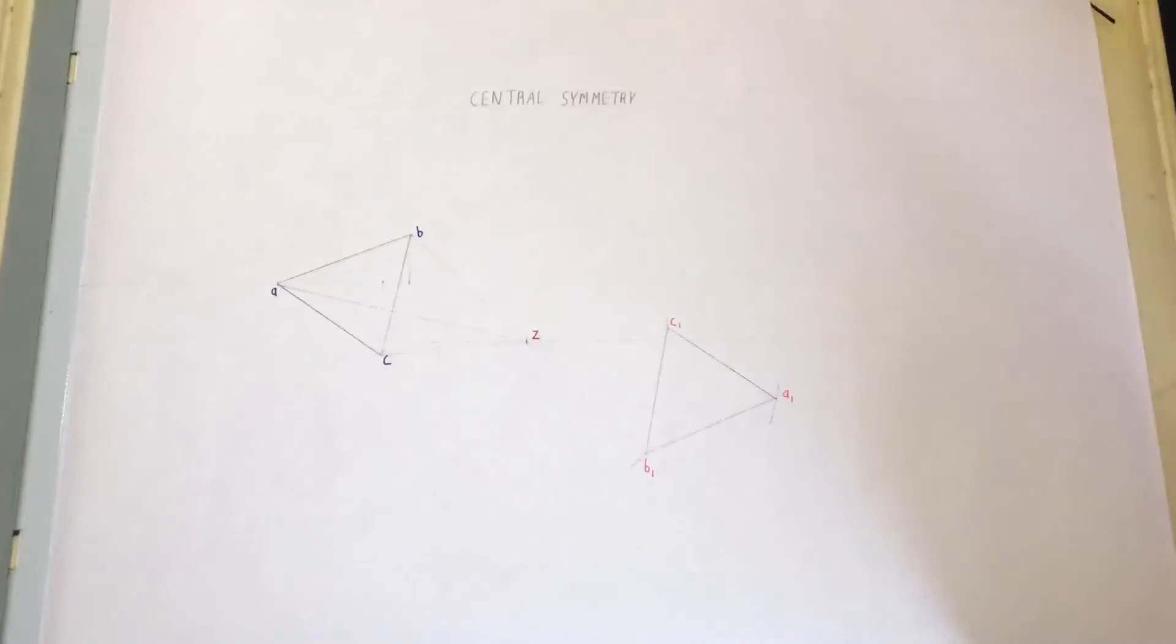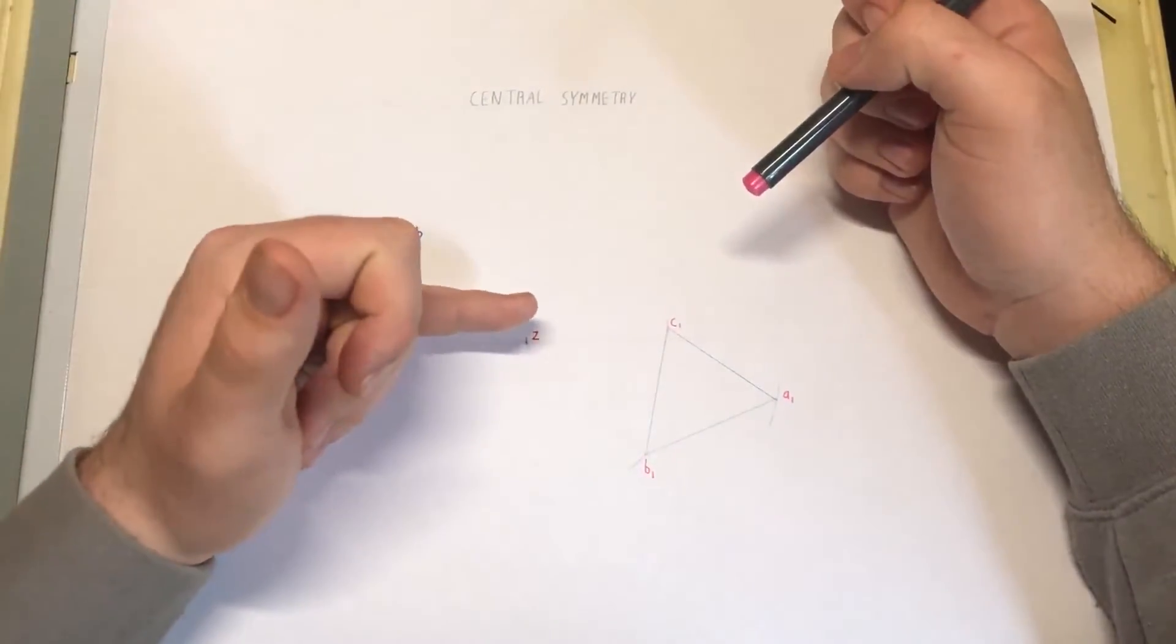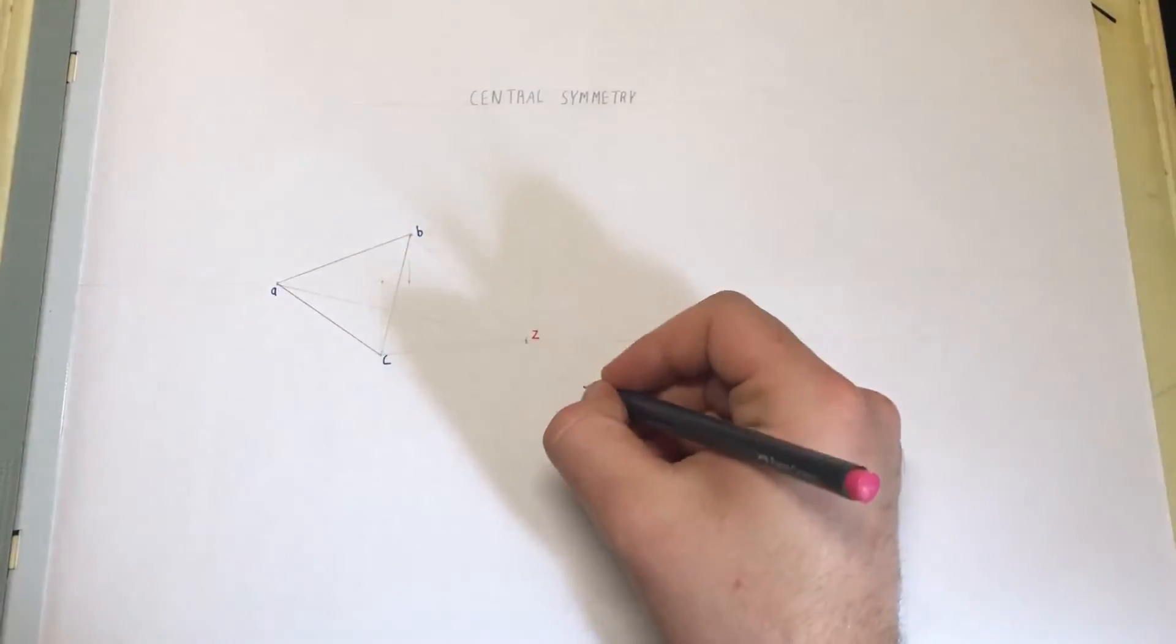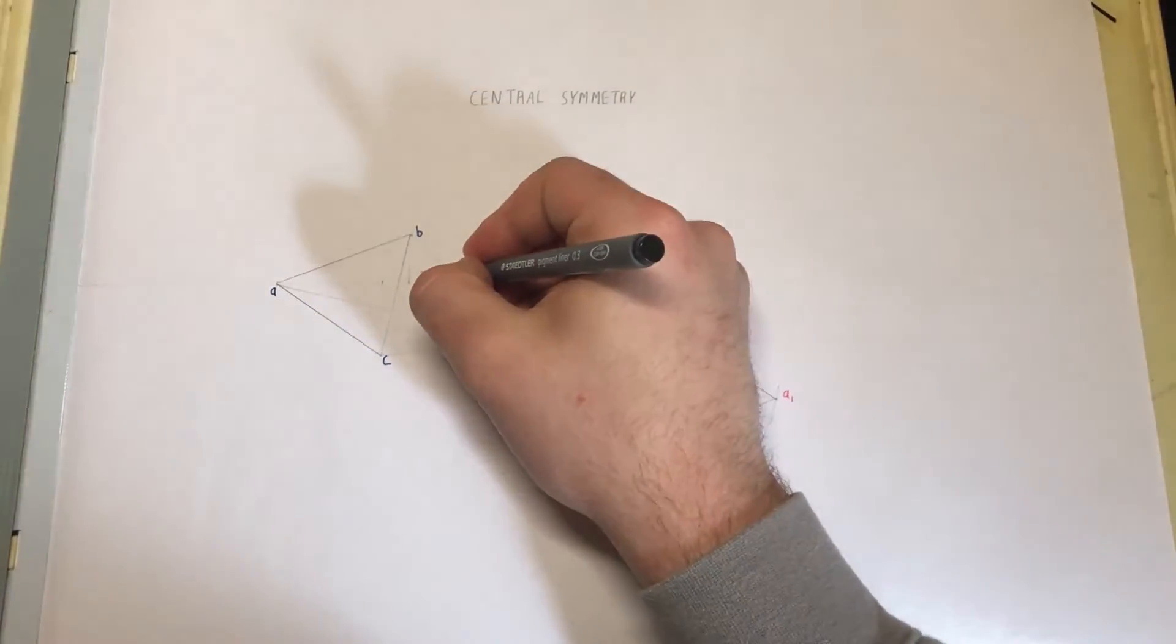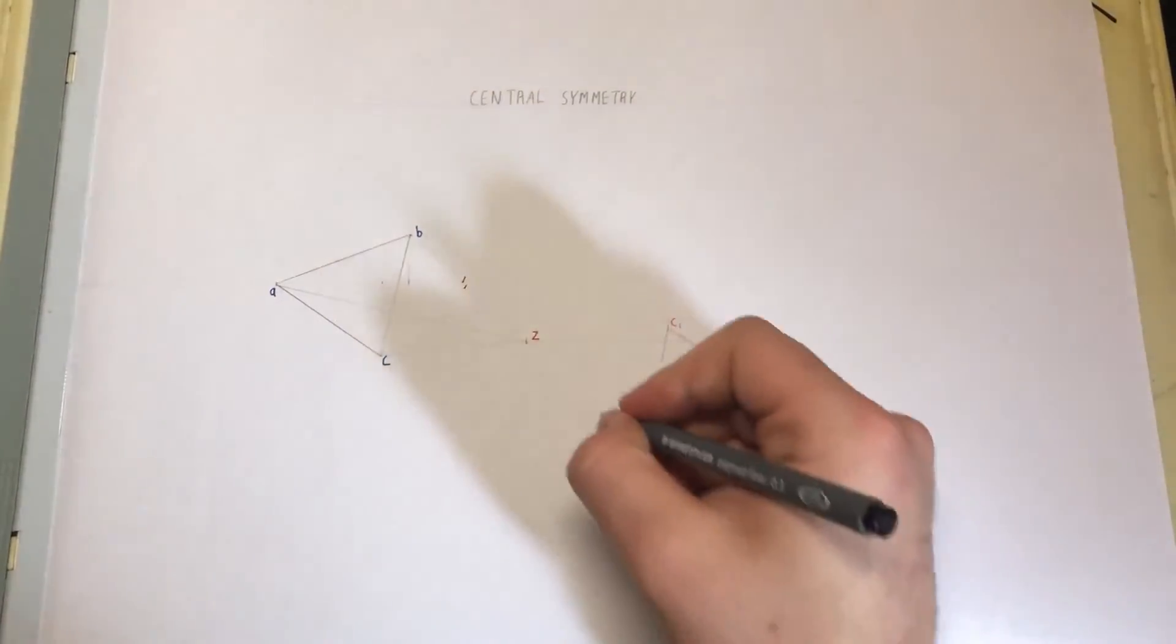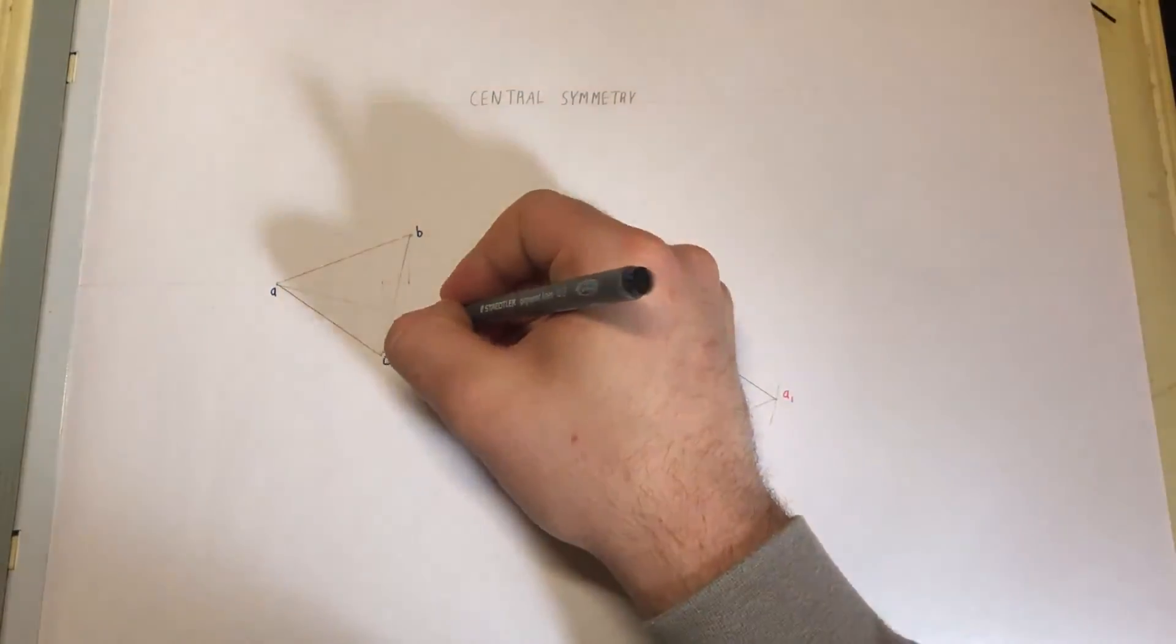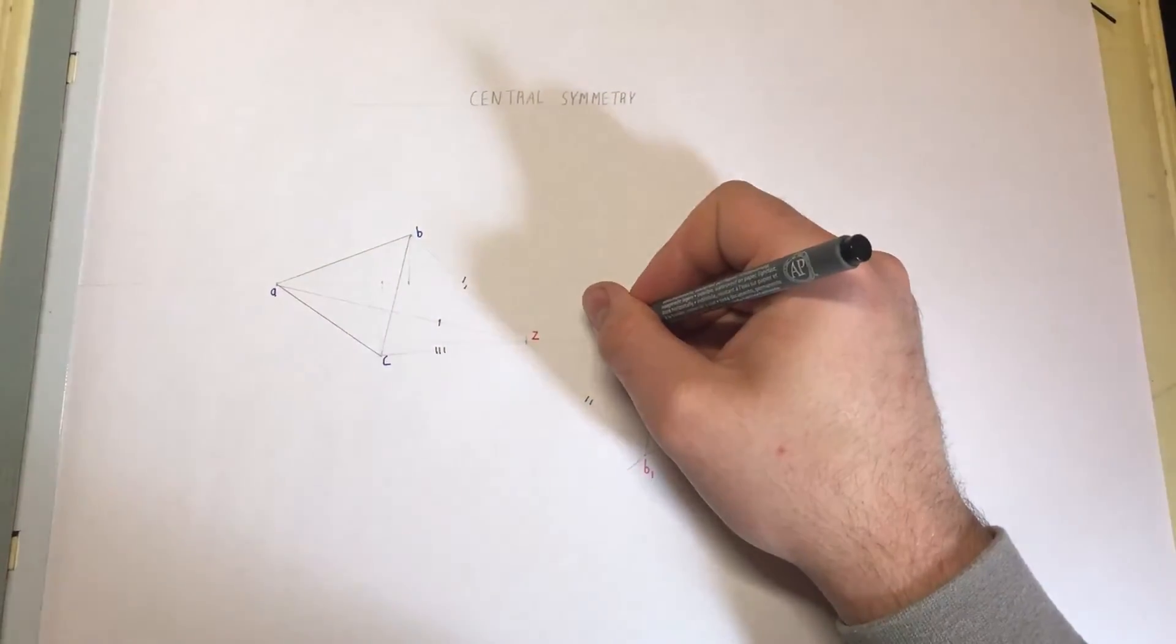The key principle we have to highlight here is that we bring all the points through the center Z, and then all the points are equal distance from Z to the point.